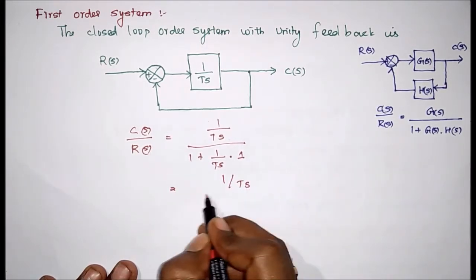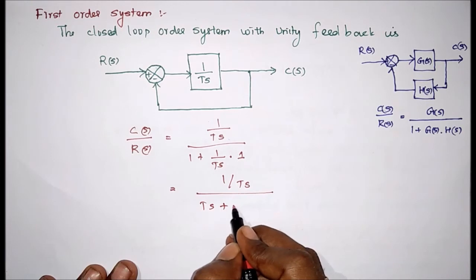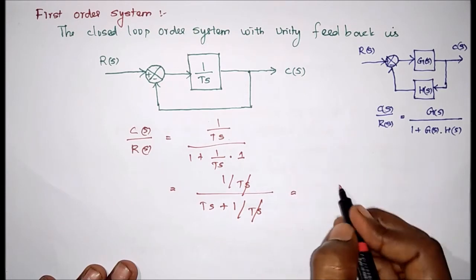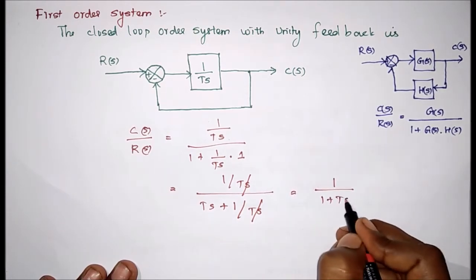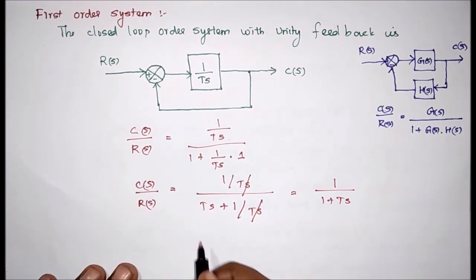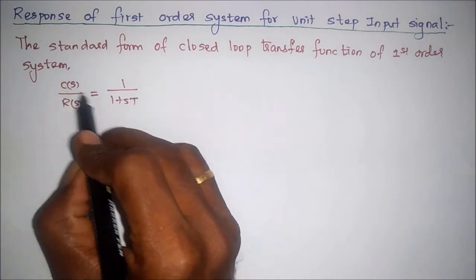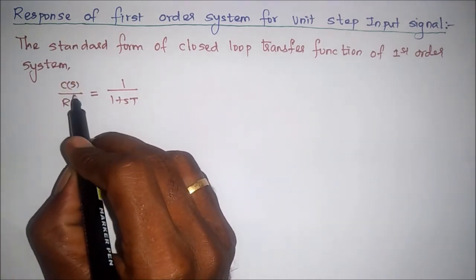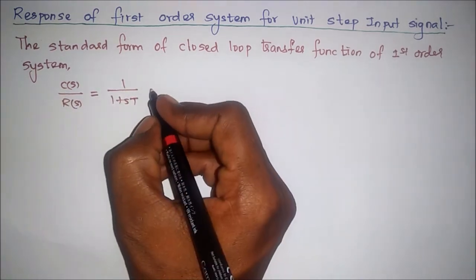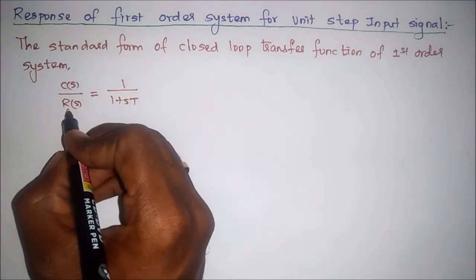We can take the LCM, so it will become Ts plus 1 divided by Ts. Both terms will cancel each other, and finally we will have 1 by (1 plus Ts) as the transfer function of the first order system. The standard form of the closed loop transfer function is C(s) divided by R(s) equal to 1 by (1 plus sT).